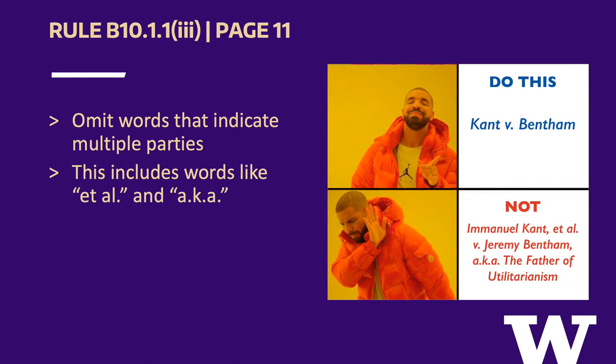Rule B10.1.1(III) requires individuals to omit phrases or abbreviations that indicate multiple parties. "Et al." is Latin for "and others," and "A.K.A." is an acronym meaning "also known as." In the example provided, the case at hand is between Immanuel Kant et al. v. Jeremy Bentham. The author of the top citation properly cited the case by dropping "et al." Additionally, the author properly omitted "A.K.A., the father of utilitarianism," since it is an alternative way people have come to know who Jeremy Bentham is.